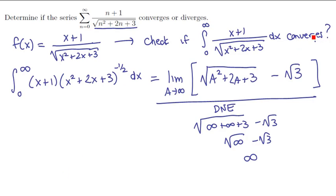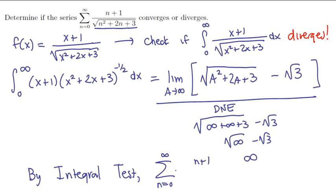We've just shown that the improper integral diverges. Since the improper integral diverges, so too must the series. That is, by the integral test, the summation of a_n diverges. And we have our answer.